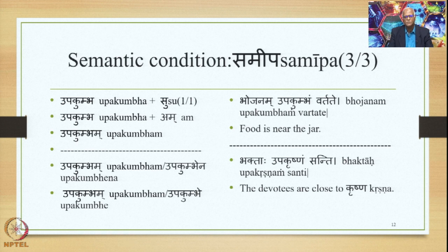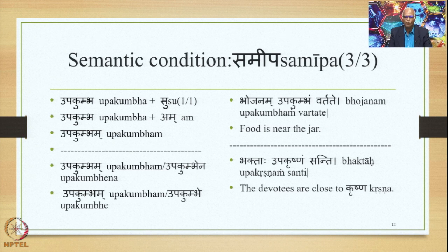Finally, after the application of sandhi rules, we get the form upakumbham. This is the Prathama ekavachana. When we derive the Tritiya and Saptami ekavachana, we get upakumbham as well as upakumbhena and upakumbhe, by the application of the sutra Tritiya Saptamyor bahulam. We use the samasa upakumbha in the sentence thus: bhojanam upakumbham vartate — food is near the jar. Similarly, bhaktaha upakrishnam santi — the devotees are close to Krishna.